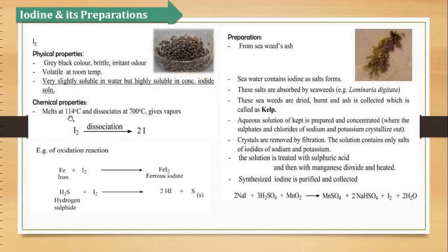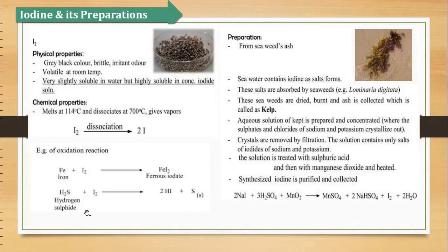Then come the chemical properties of iodine. It melts at 114 degree centigrade and dissociates at 700 degree centigrade. 114 pe yeh melt to kar jaati hai, lekin iodine ko todne ke liye into two iodine molecules, hamare paas 700 degree ka temperature hona chahiye. Other reactions mein oxidation reaction: iron ke saath jab yeh react karta hai to hamare paas ferrous iodide banta hai. Hydrogen sulfide ke saath react karta hai to hydrogen iodide plus sulfur free aa jaata hai.